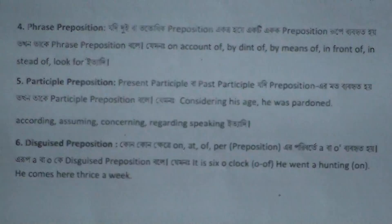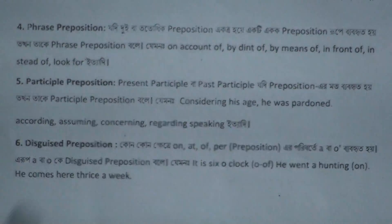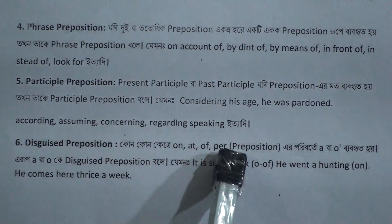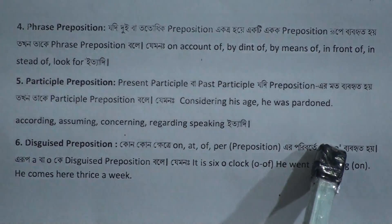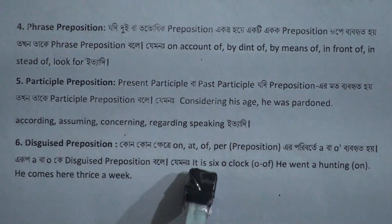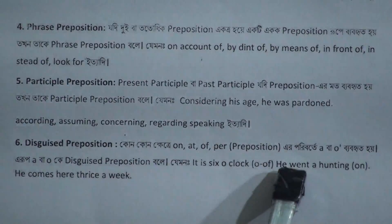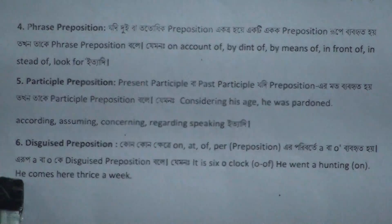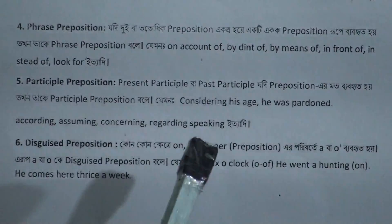The last, number six, is disguised preposition. This is when a preposition appears disguised — we actually see it but do not recognize it as a preposition. For example: 'It is six o'clock' — here 'o' is 'at', a disguised preposition. 'He went hunting' — here 'a' is a disguised preposition. 'He comes here thrice a week' — here 'a' is also a disguised preposition.